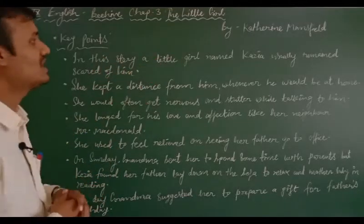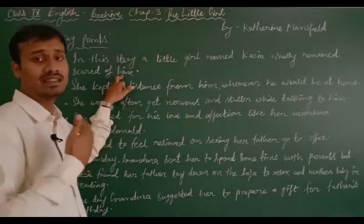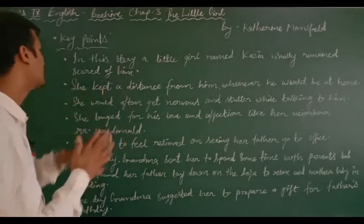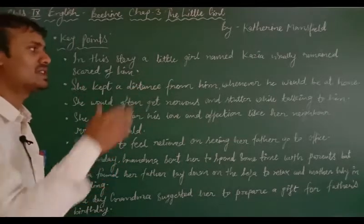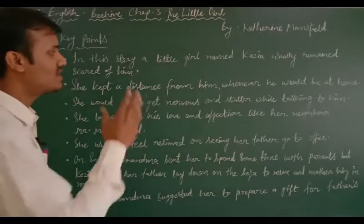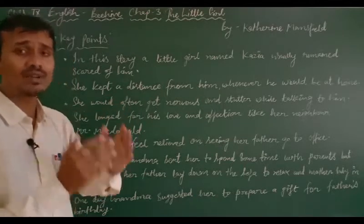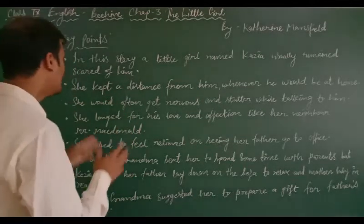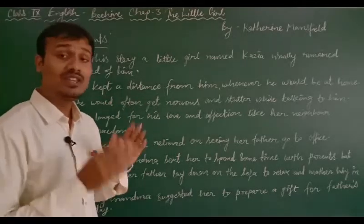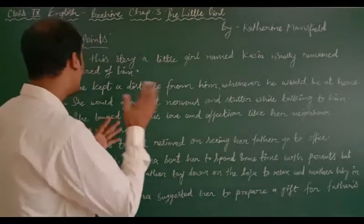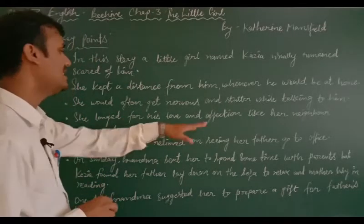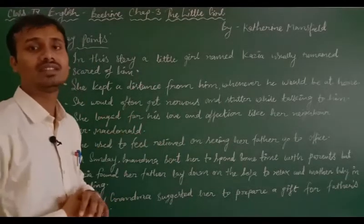Now let's move to the key points of this chapter. In this story, a little girl named Kezia usually remained scared of her father. She finds her father like a giant — very majestic and harsh towards her — so she kept a distance from him whenever he was at home. In his presence, she would never come closer. She would often get nervous and stutter while talking to him. She longed for love and affection like her neighbor Mr. Macdonald, who used to love and even play with his daughter. She used to feel relieved when her father left for the office.